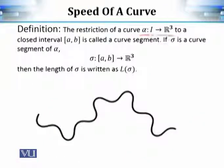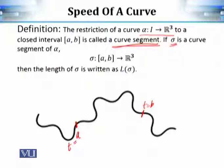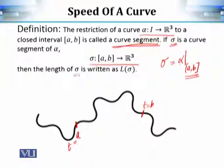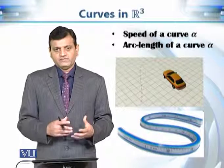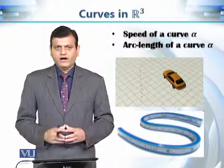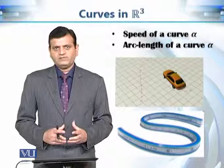If a curve α is defined on an interval I and [a, b] is a subinterval, we call the restriction of α to [a, b] a curve segment, denoted σ. The length of σ is denoted L(σ). In summary, this module has covered how to calculate the speed of a function α: I → R³ representing a trajectory, and how to calculate the arc length from parameter value t = a to t = b.